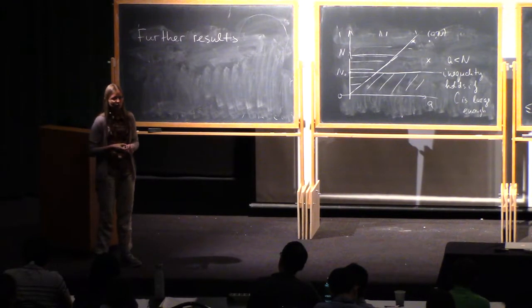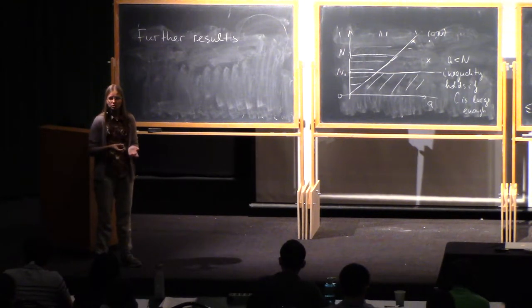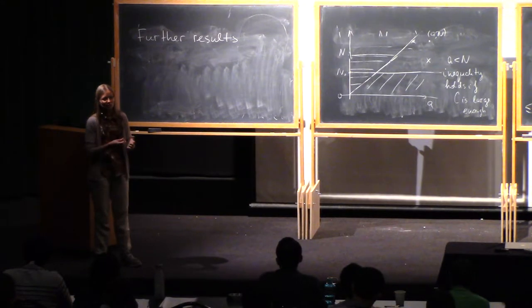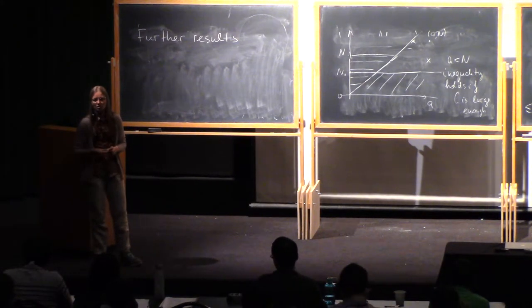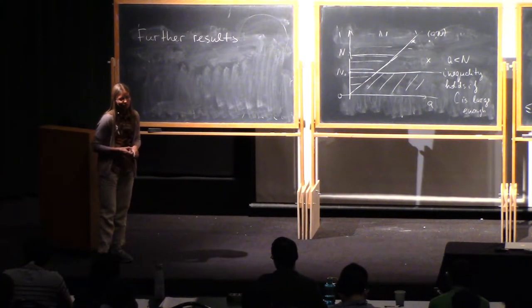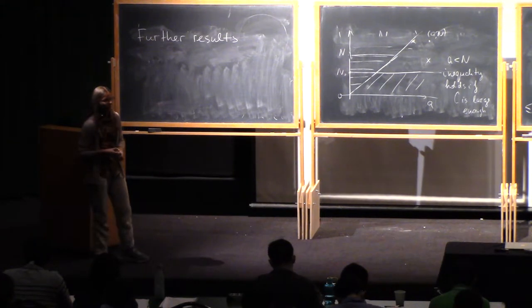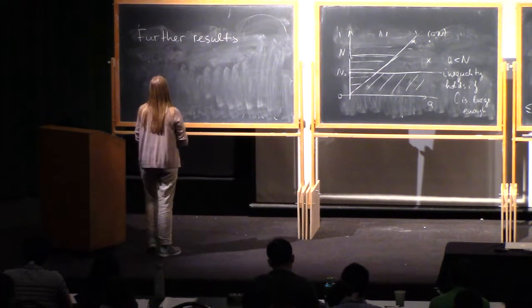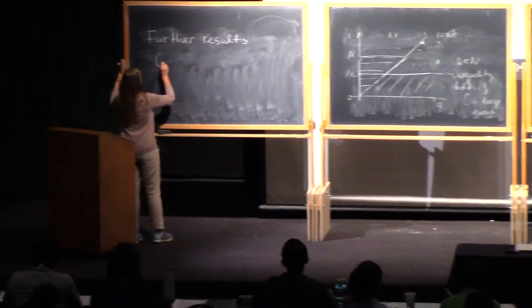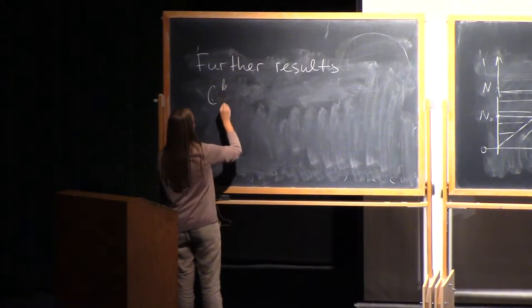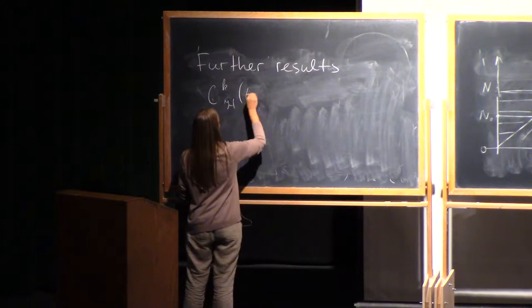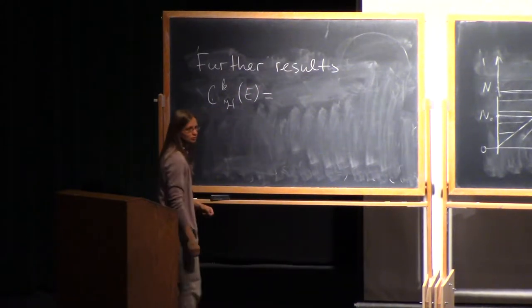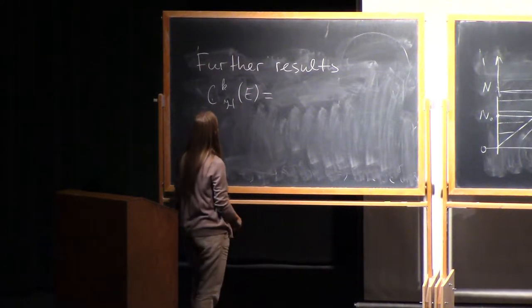And it is well known for real analytic functions. You can propagate smallness from subsets of co-dimension larger than 1. But it is also true here. So let me define Hausdorff content of a set. It's almost Hausdorff measure, but it's a better thing.